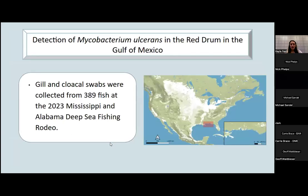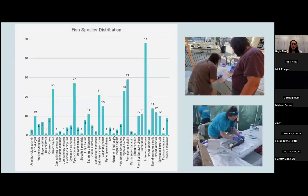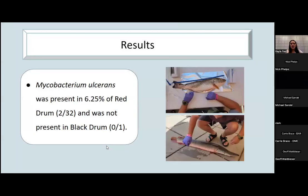So in my research of detecting mycobacterium ulcerans in red drum, we got our samples from the Alabama and the Mississippi deep sea fishing rodeos. Here is a chart of the fish species distribution of all the fish sampled. What we did was take swabs of both the gills and cloacas of each fish. We did this instead of taking the dermal mucosa because we were trying to avoid contamination from any anglers or anybody handling the fish. After extracting the DNA and using our PCR protocols, we found so far that only 6.25% of red drum had mycobacterium ulcerans present. So only two of the fish so far, but they both had mycobacterium present in both the gill and the cloaca.